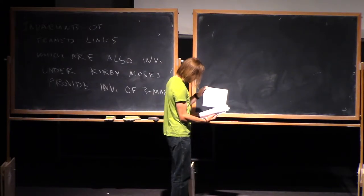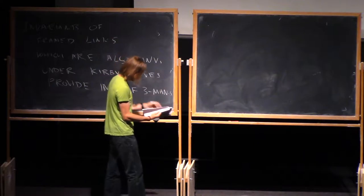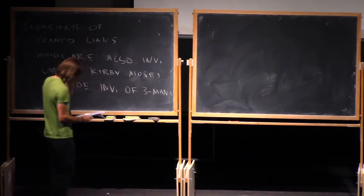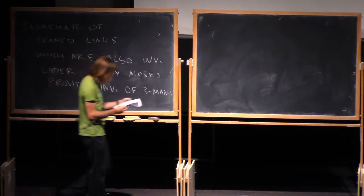So this move is usually called Kirby move, or sometimes Fenn-Rourke moves, or Kirby-Fenn-Rourke moves. The original moves by Kirby were a bit different. And Kirby moves provide invariants of three-manifolds. Okay, good.